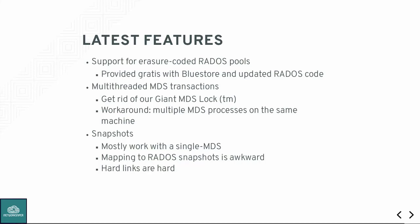When we typically prefer to replicate data to avoid data loss, in Ceph you can also use erasure coding instead of replication — you save on storage, but often take a performance hit. The erasure coding algorithm is pluggable; we typically use Jerasure, a run-of-the-mill erasure coding algorithm. So if you want something like RAID 6 (8+2), you'd get a 20% storage overhead for the ability to lose two devices — much better than a 3x storage overhead from replication, but performance is lower. That's now supported with CephFS where before it only worked on replicated pools.